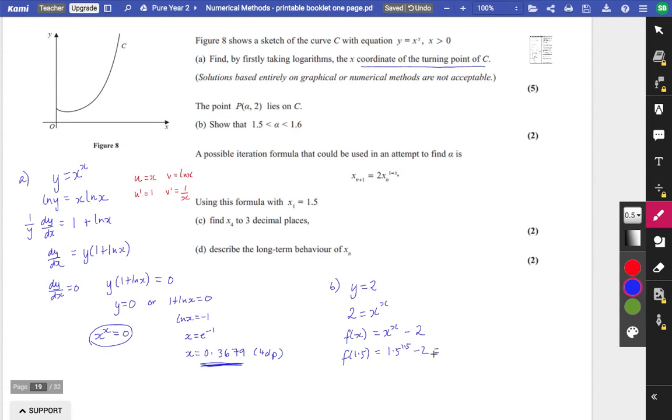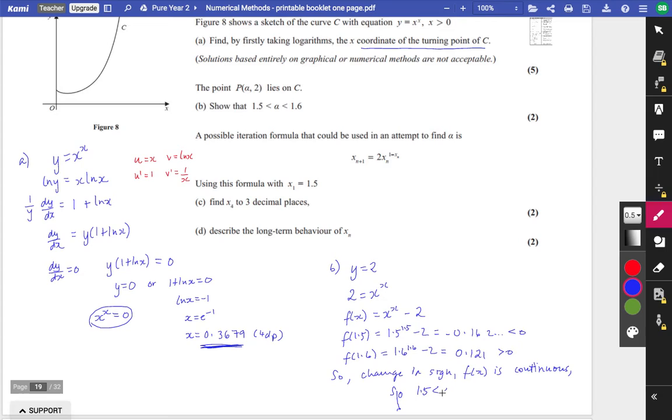So I'm going to get 1.5 to the 1.5 minus 2. Let's see what I get there. And that's negative 0.162 blah blah blah, so that's less than 0. And I'm now going to put in 1.6 into this. So it's going to be 1.6 to the 1.6 minus 2. And we're hoping this one's going to be positive. 1.6 to the 1.6 minus 2, and it is positive. It's 0.121, which is greater than 0. So change in sign. I'm going to get bored of writing this. Change in sign, f of x is continuous, so alpha is between 1.5 and 1.6. Only two marks though, feels like quite a lot of work we've got to do there.